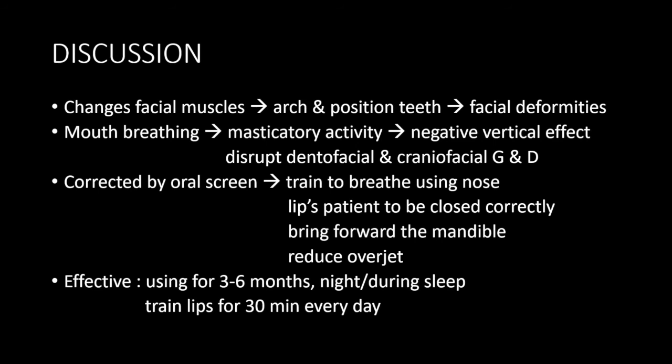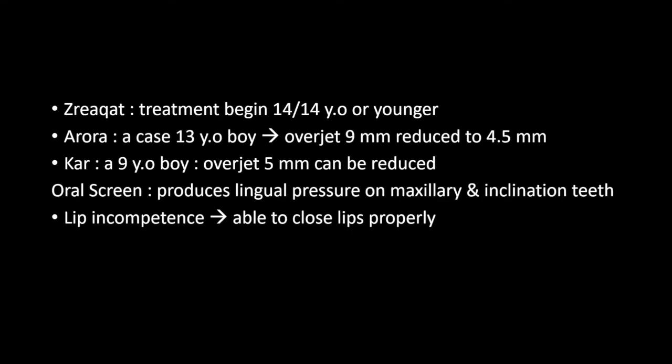Mouth breathing can be corrected with the use of functional appliances such as the oral screen. The use of an oral screen can train the patient to breathe using their nose, help the patient's lips to close correctly, bring forward the mandible, and reduce the overjet. This bad habit can be removed with an oral screen by giving a breathing hole in the labial part of the oral screen. The appliance is effective and useful as long as the patient is cooperative in using it for three to six months, trains their lips for 13 minutes every day, and uses it at night or during sleep. Treatment is recommended to begin before the age of 13 or 14 years old or younger.